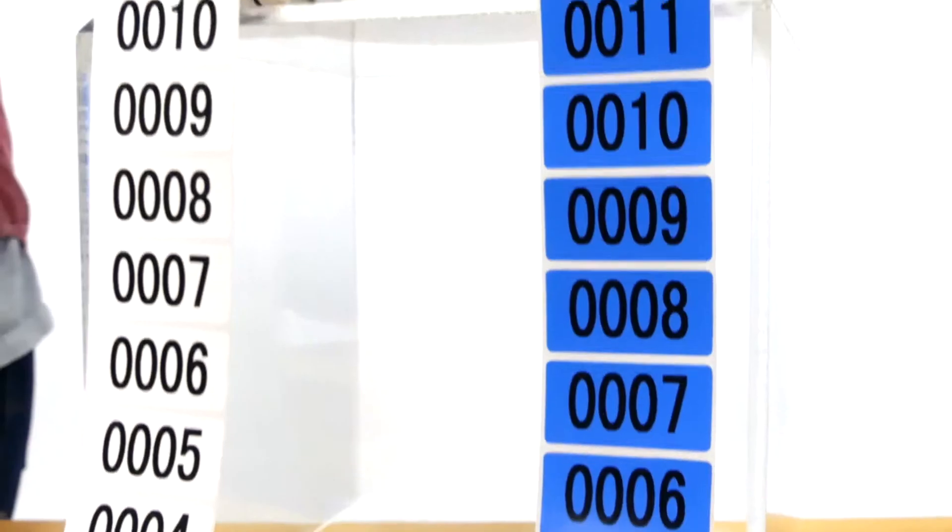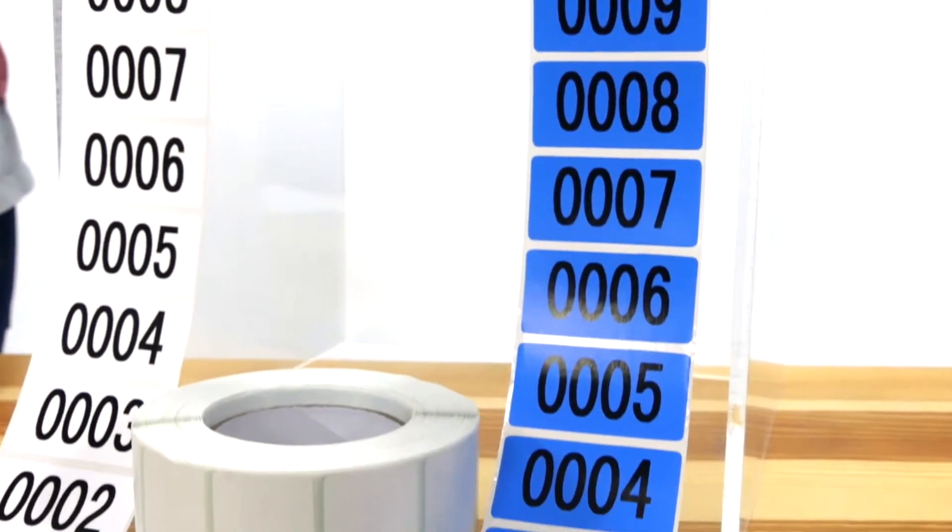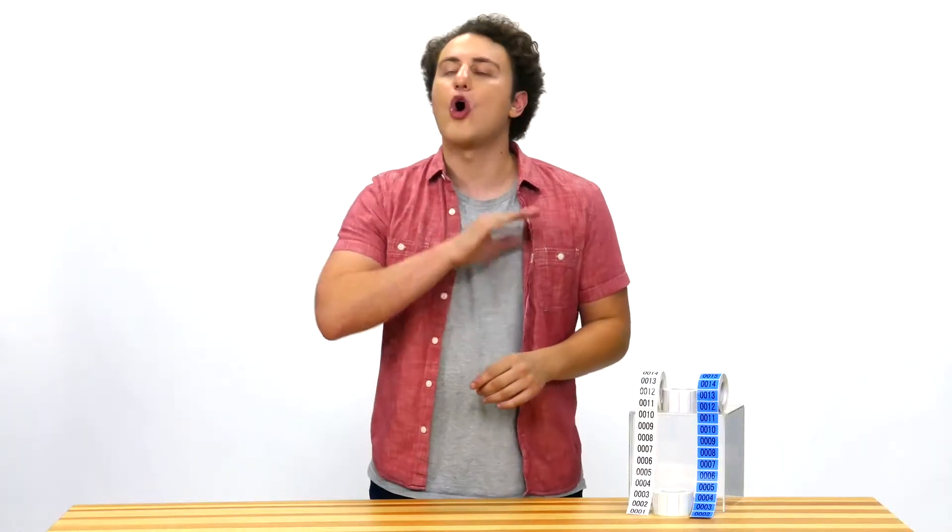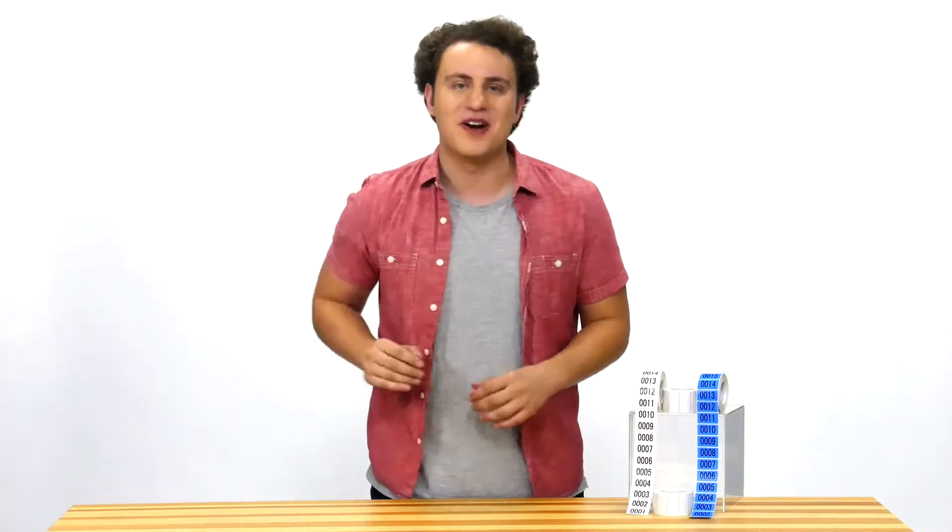These are the consecutively numbered sticker labels by Enzo. Made of a 1.7 inch diameter core, the consecutive numbers begin at 1 and go all the way to 1000.